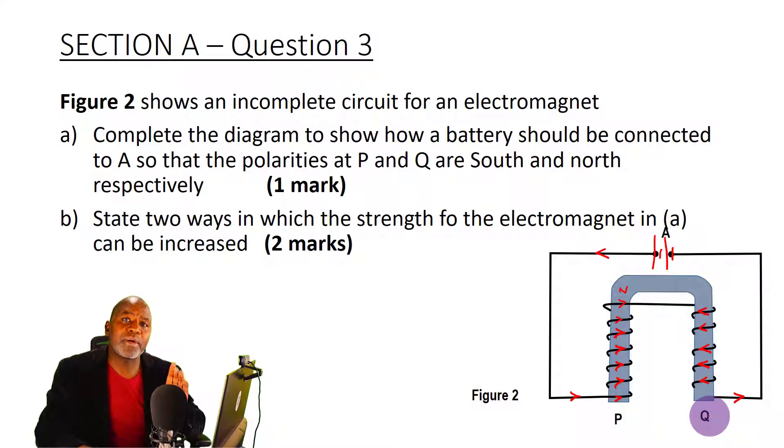Let me point out one or two errors that students make when they talk about number of turns. Many of them talk about number of coils. That is wrong because in this diagram I only have one coil with several turns. The moment you start talking about increasing number of coils you will definitely get it wrong. So get it first time that when we talk about increasing the strength of an electromagnet we increase the number of turns, not the number of coils.